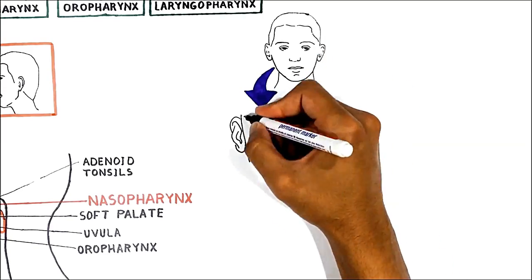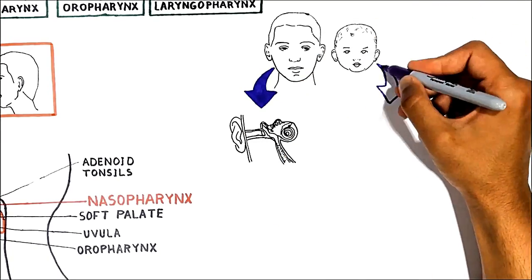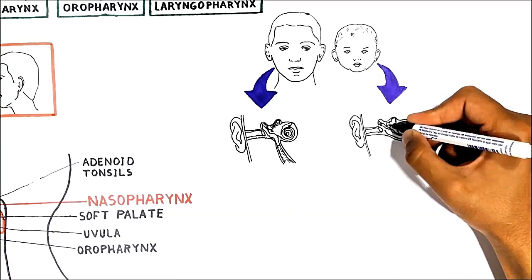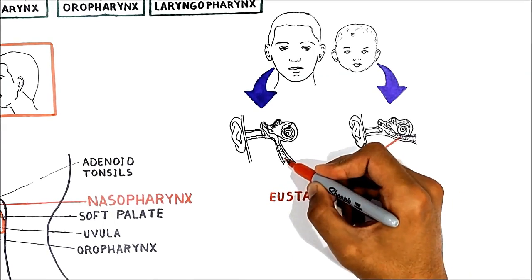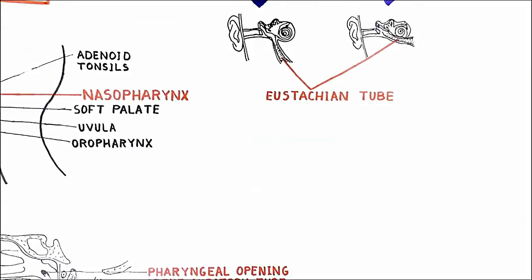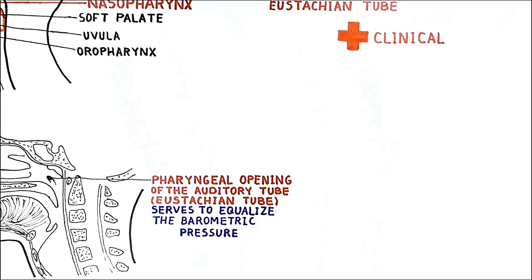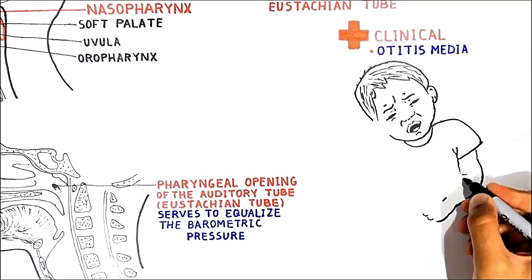Contrasting the adult and children's Eustachian tube, it is important to note that the Eustachian tube in children is shorter and at more of a horizontal angle than seen in the adult ear. Therefore, in cases of dysfunction of the Eustachian tube, infections in the upper respiratory tract can easily reach the middle ear and cause otitis media, also known commonly as inflammation of the middle ear.